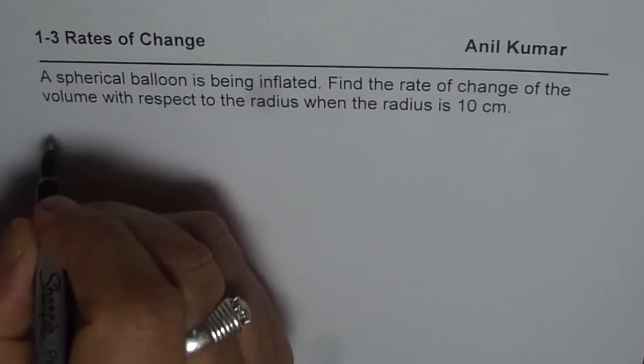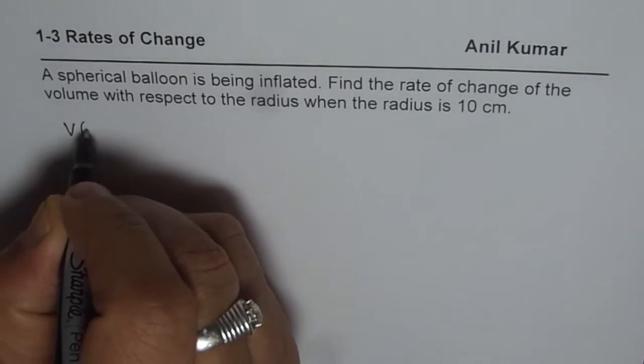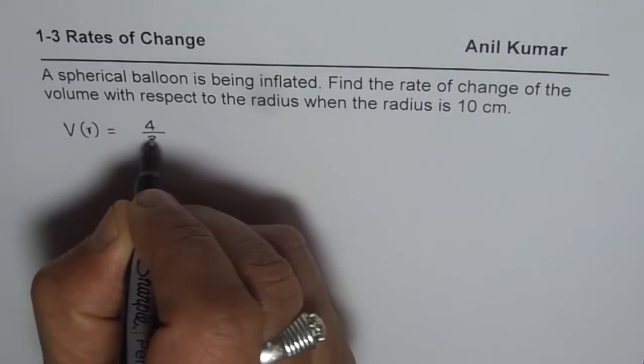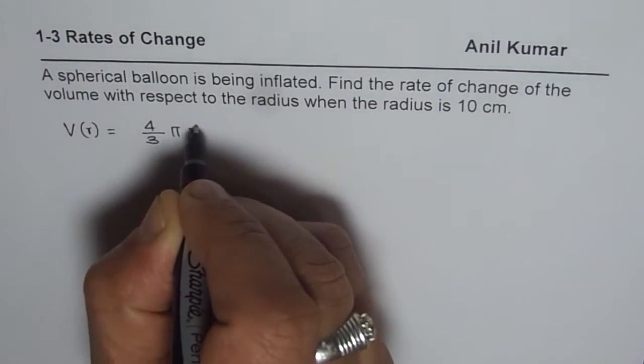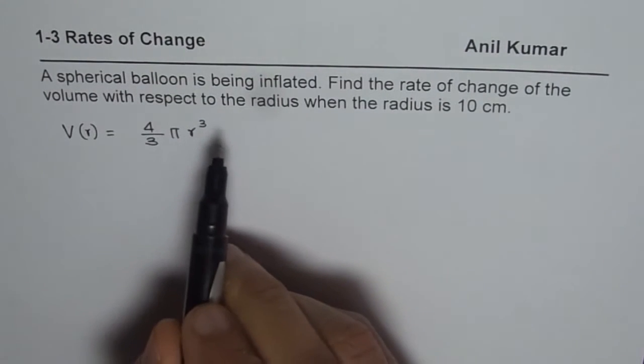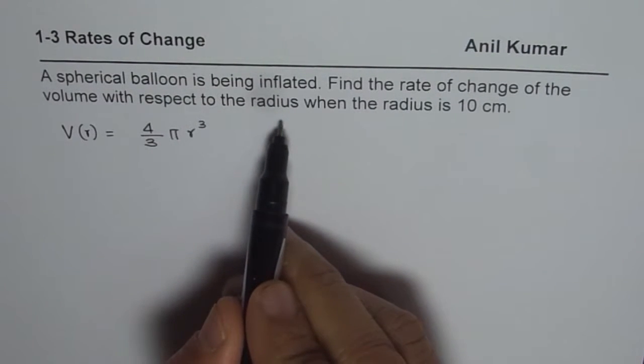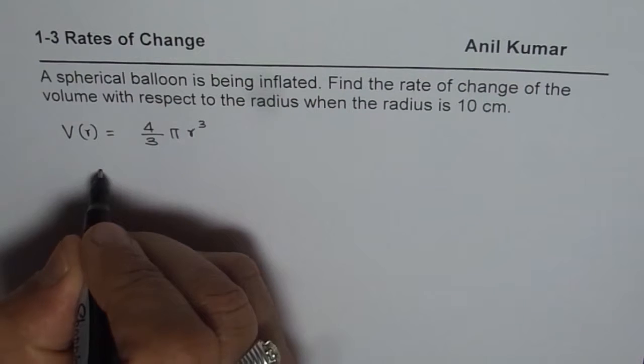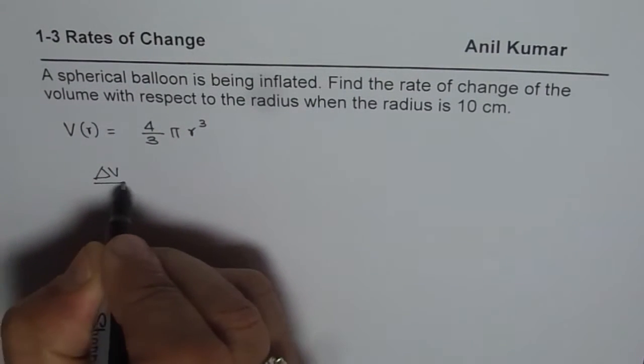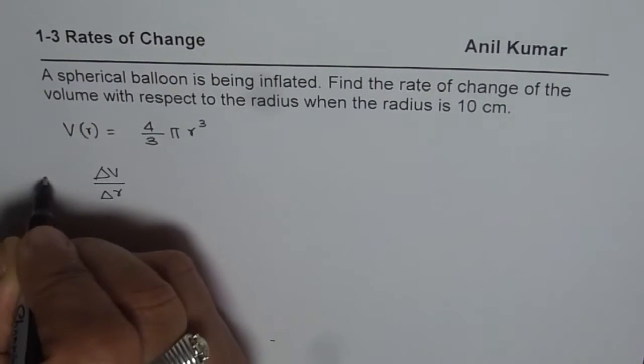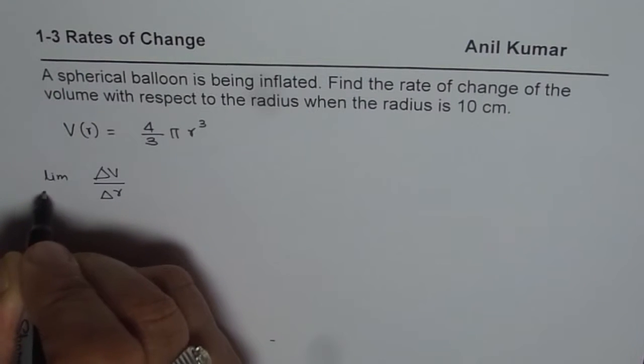Now for a sphere, volume as a function of radius is given as 4 by 3 pi r cube. When we are saying rate of change with respect to radius, that means delta v over delta r, limit delta r.